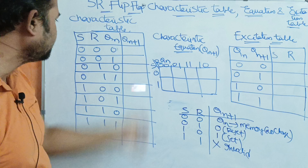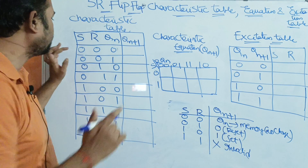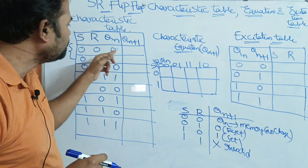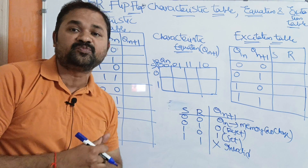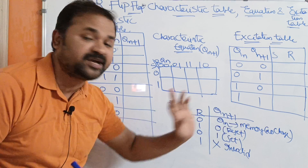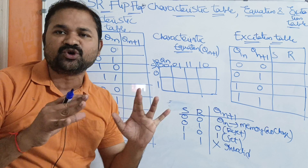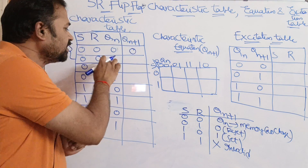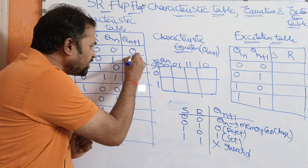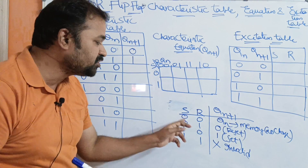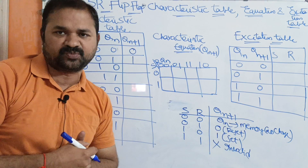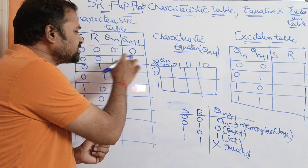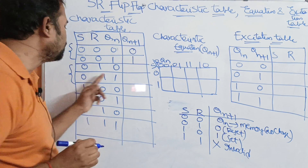Let us fill the output column. For S=0, R=0 — the first two combinations — if the current state output is 0, then the next state output is also 0; if current state is 1, next state is also 1. There is no change in the output, so we get the same value: Qn+1 equals Qn.